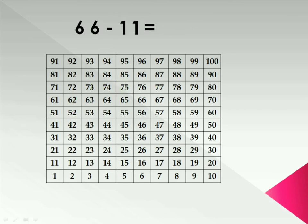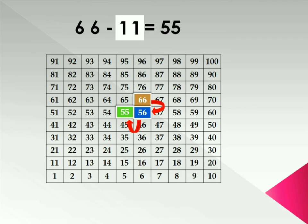Now subtraction. 66 minus 11. So highlight 66 in the table. As in 11, one tens is there. So jump one step downward. That is 56. And one is there on the units place. Subtraction is opposite to addition. As one is there at the units place. Move one step towards left. And answer is 55.